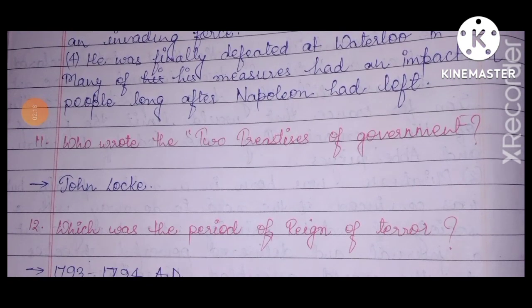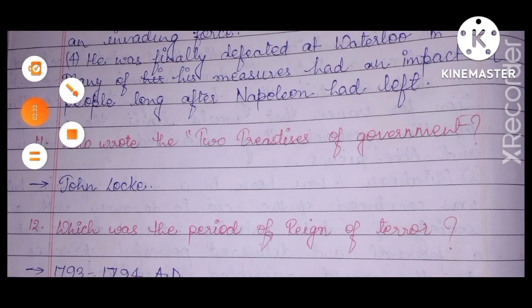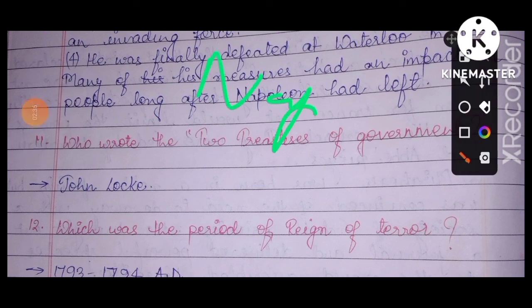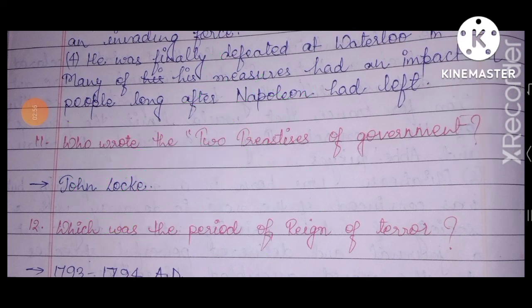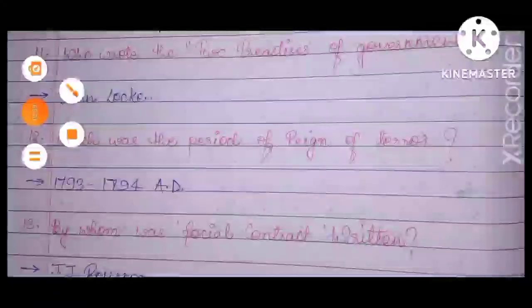Many of his measures had an impact on people long after Napoleon had left. These questions had seven to eight points but the answers you may not remember — that's okay. My notes were in descriptive paragraphs, but if you want mind map notes, I can provide those. For Napoleon, I'll give you points A, B, C, D in mind map format so you can write the answer very easily. You can write in the comment section if you want that.